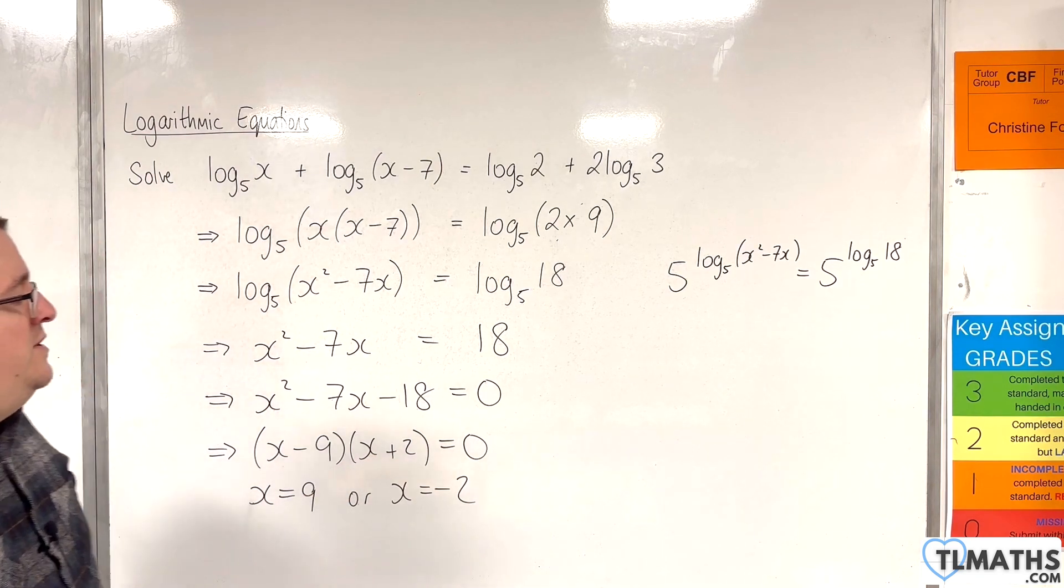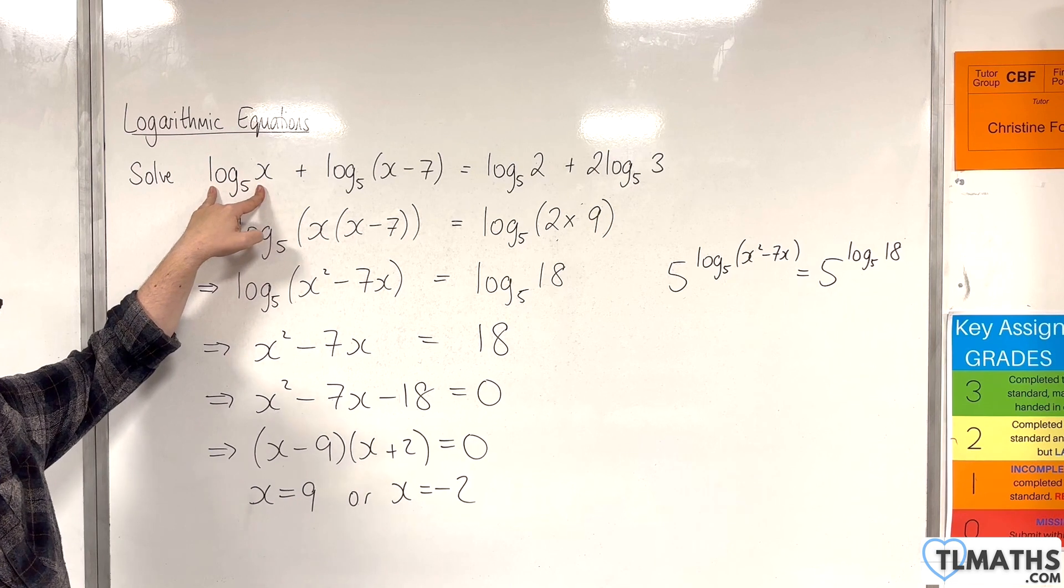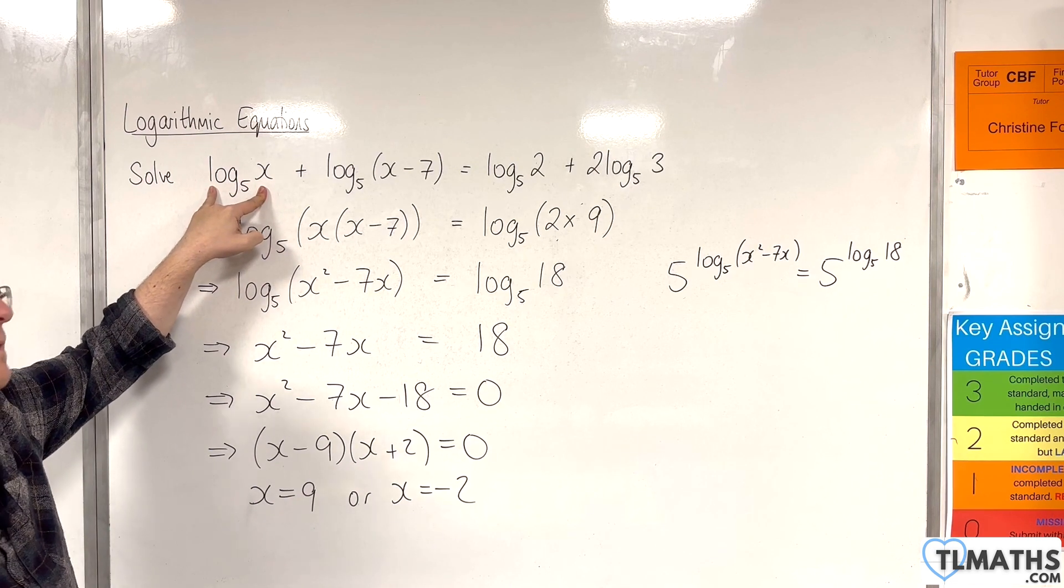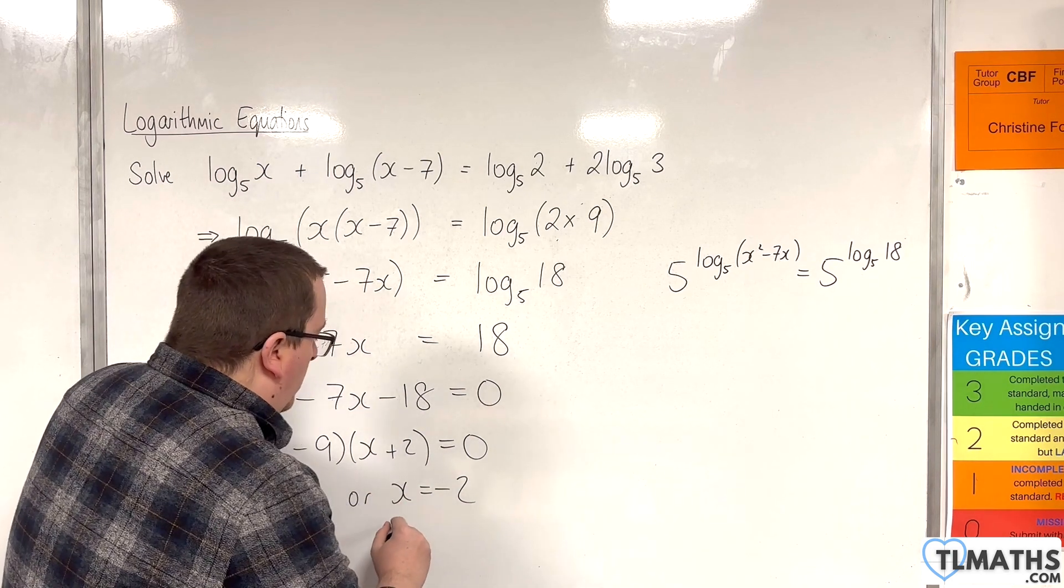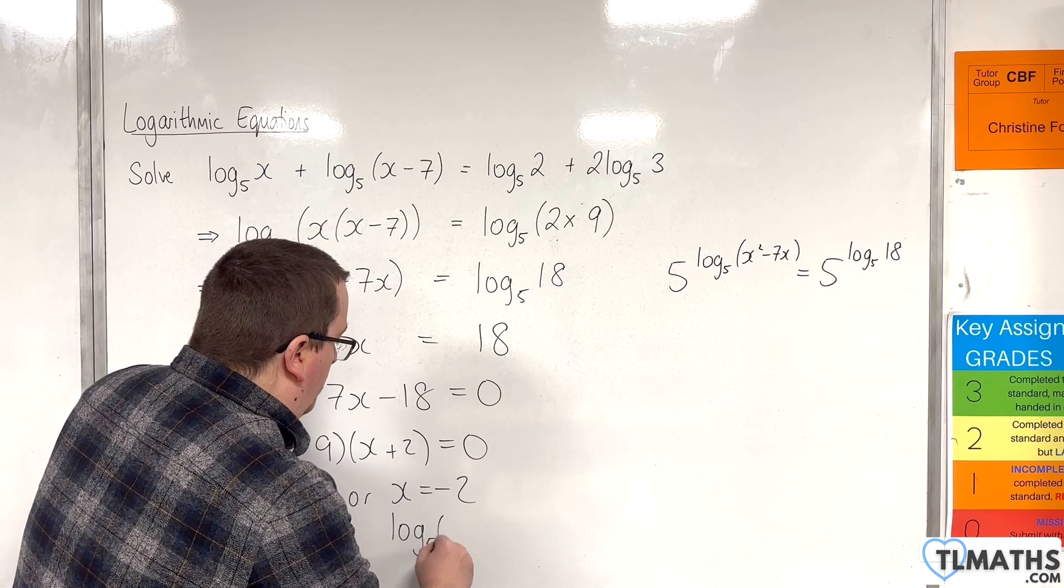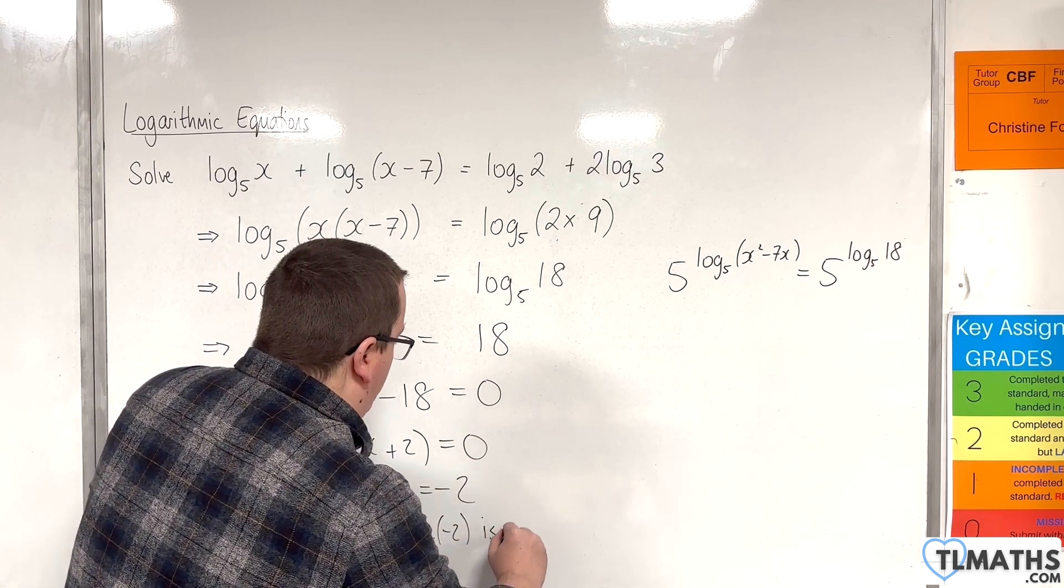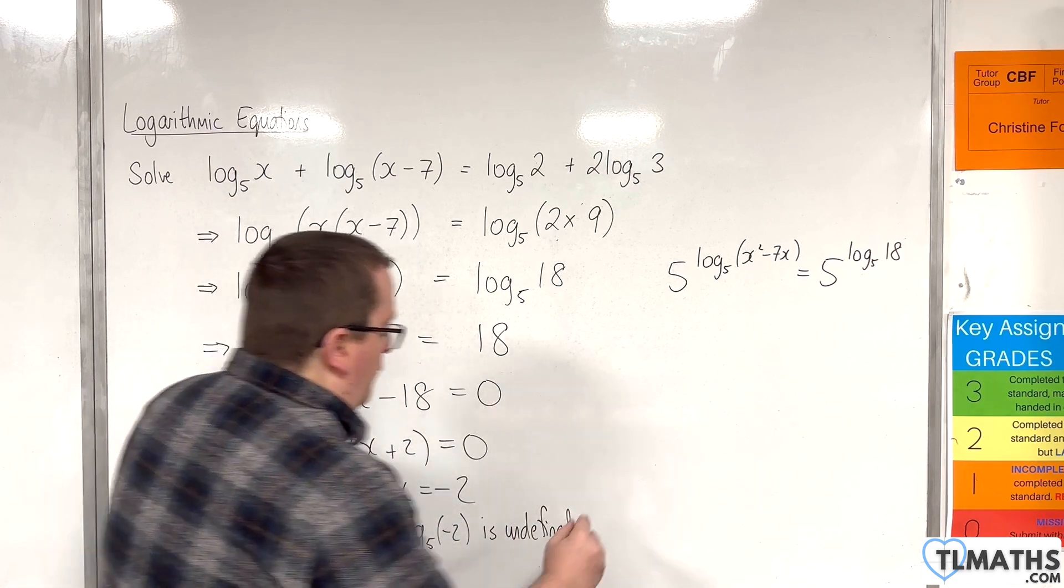But x equals -2 is not fine. Because log base 5 of -2 is undefined for real values, for real numbers. So this is not a solution. Log base 5 of -2 is undefined for real values.